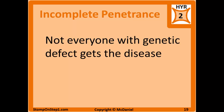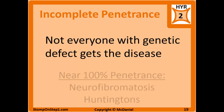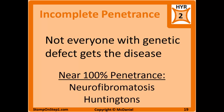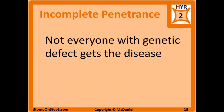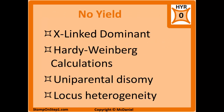Incomplete penetrance is when not everybody with a genetic defect gets the disease. This is common most of the time, because incomplete penetrance really means anything other than 100% penetrance, which is pretty rare. Neurofibromatosis is a good example of something with close to 100% penetrance, and Huntington's disease also has very high penetrance. Most diseases won't be anywhere near 100%. There are also related topics I've given a high yield rating of 0 and have decided not to include in this video — if you choose to study them, do so after mastering all the higher yield material.